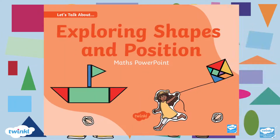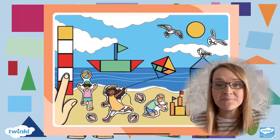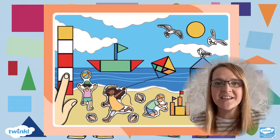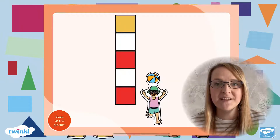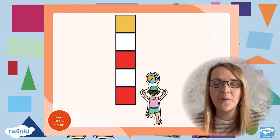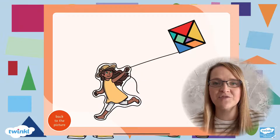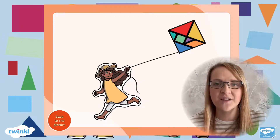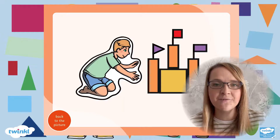Let's start by taking a look at this Exploring Shapes and Position PowerPoint. This bright and colourful PowerPoint looks at a scene set at the seaside with different images made from different shapes. Once you click on the PowerPoint it will bring you to another slide showing the different images made of shapes, where you can discuss and talk with your children about how the picture is made up of different shapes, what shapes are included, and you could even talk about how they are similar and different.